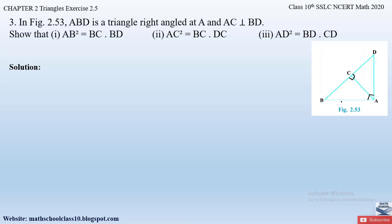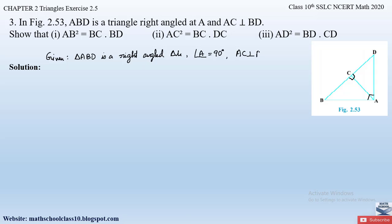So by using theorem 2.7 we will prove all three parts. Let us write down: Given — triangle ABD is a right-angle triangle right-angled at A (angle A = 90°), and AC is perpendicular to BD.